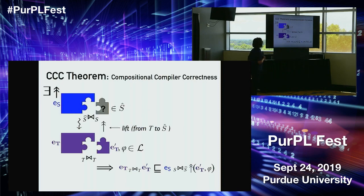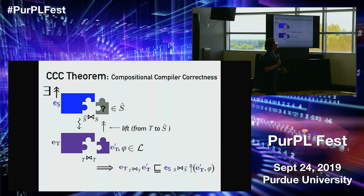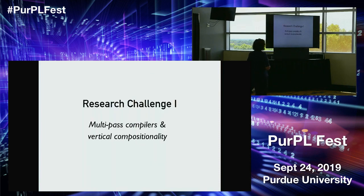The hope is that this kind of theorem gives us a social process: if future compositional compiler correctness results instantiate the CCC framework, then a reviewer for the next such paper might have an easier time understanding the theorem and comparing its pros and cons to existing approaches.